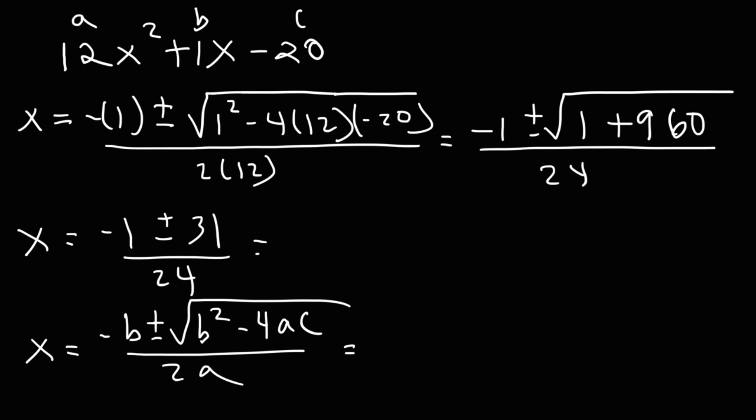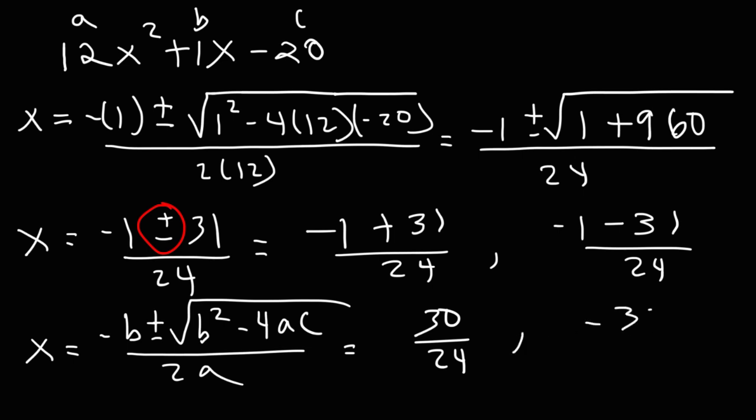So at this point, we have two possible answers for x. That's negative 1 plus 31 over 24 and negative 1 minus 31 over 24. Negative 1 plus 31, that's going to be positive 30. And negative 1 minus 31, that's negative 32.